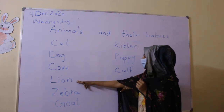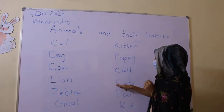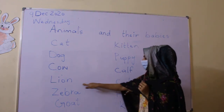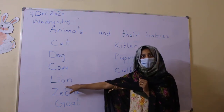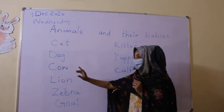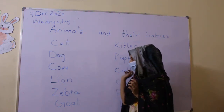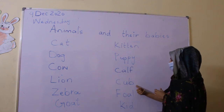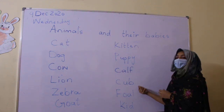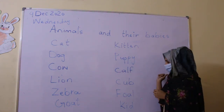Number four — lion. Lion. And her baby name is cub.